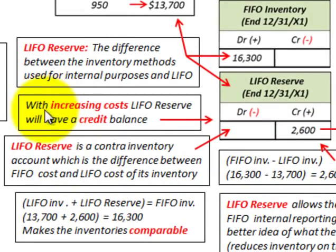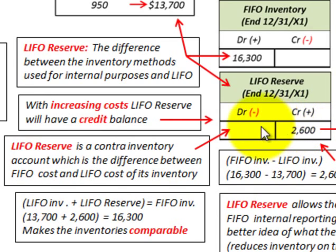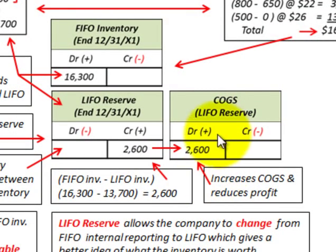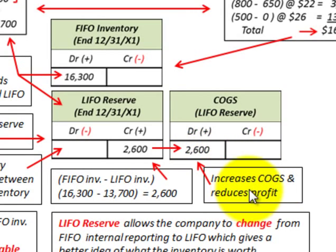Just to review: with increasing costs, the LIFO reserve will have a credit balance. With decreasing costs on our inventory purchases, it would have the opposite effect, reducing this LIFO reserve. When your LIFO reserve increases, that causes an increase in your cost of goods sold, which reduces profit.